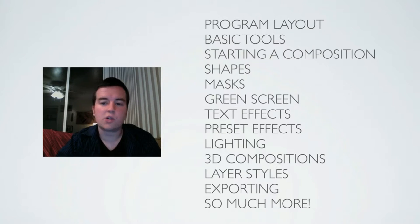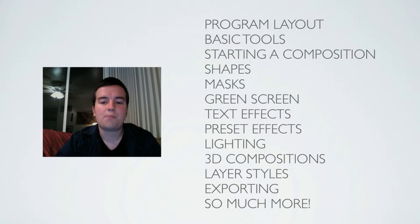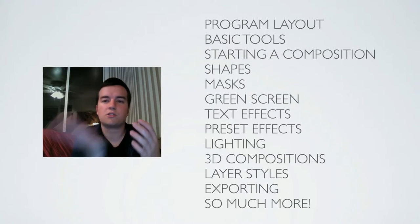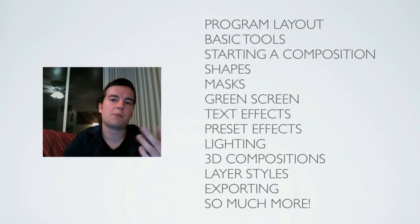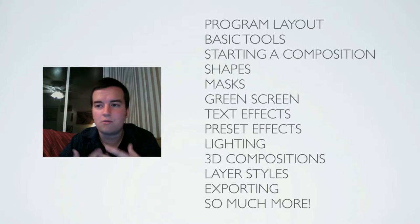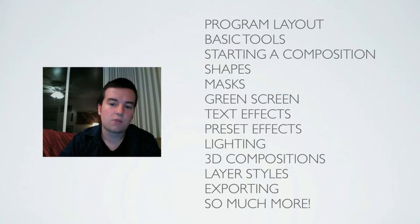We're also going to have a whole section on green screen and advanced green screen editing in After Effects. We're going to talk about the preset effects and some text effects that will really make your project spark and pop. For example, we're going to talk about how to create a page turn effect, where it looks like your compositions are turning like a page in a book. We'll also cover some cool effects you can make billowing clouds out of. We're going to talk about lighting and how to add lighting to your 3D or non-3D sets, which brings me into another topic: 3D compositions.